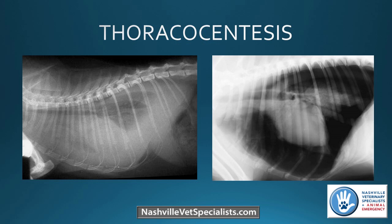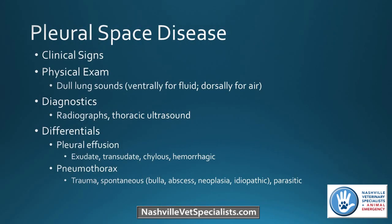Thoracocentesis is a pretty common procedure that we do in the ER. These radiographs show pleural effusion and a pneumothorax, respectively — both indications to perform a thoracocentesis. We're really looking at pleural space disease. Clinical signs include dull lung sounds ventrally for pleural effusion or dorsally for a pneumothorax. Usually patients are also tachypneic or dyspneic. On diagnostics, we can see radiographs or use thoracic ultrasound to see pleural fluid.